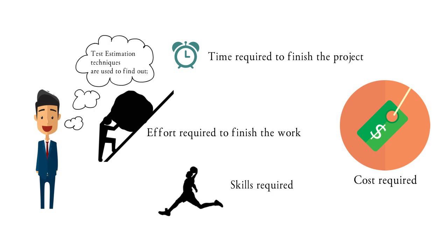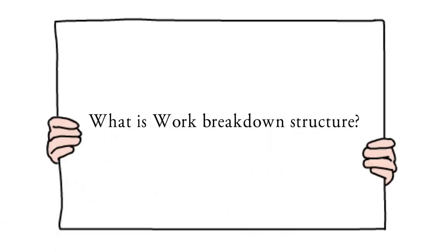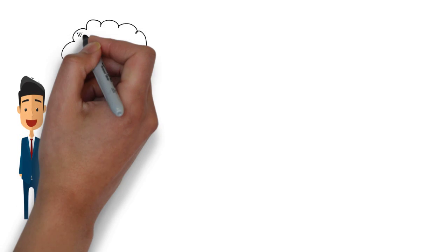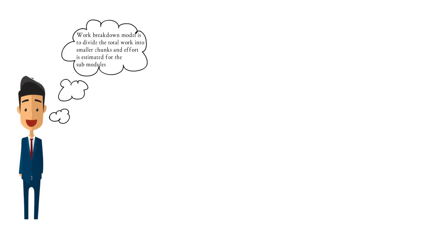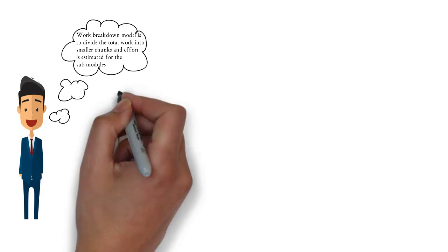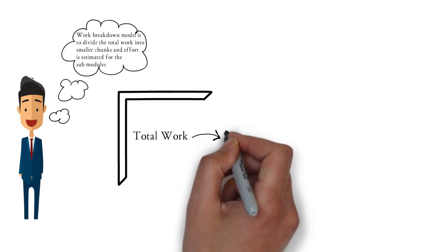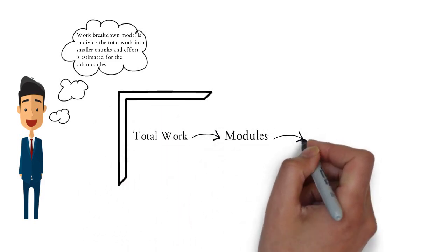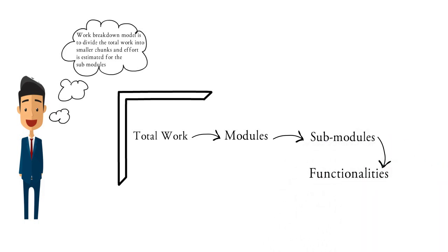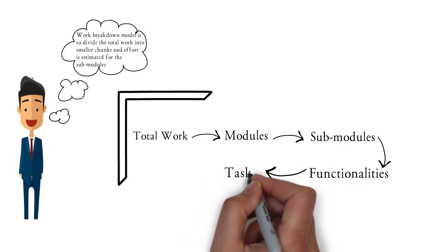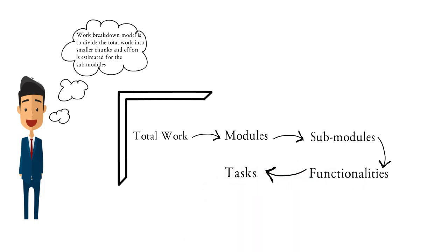Test estimation is one of the activities which we perform during the beginning of the project. Now let's understand what is work breakdown structure. Lots of effort and work is required to complete the project. In work breakdown structure, the whole work is divided into smaller chunks and effort is estimated for each task. The total work can be divided into different modules, each module into sub-modules, and each sub-module into different functionalities.